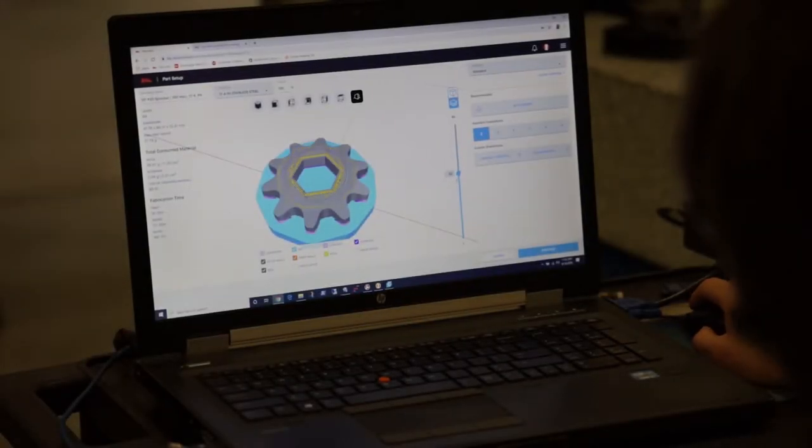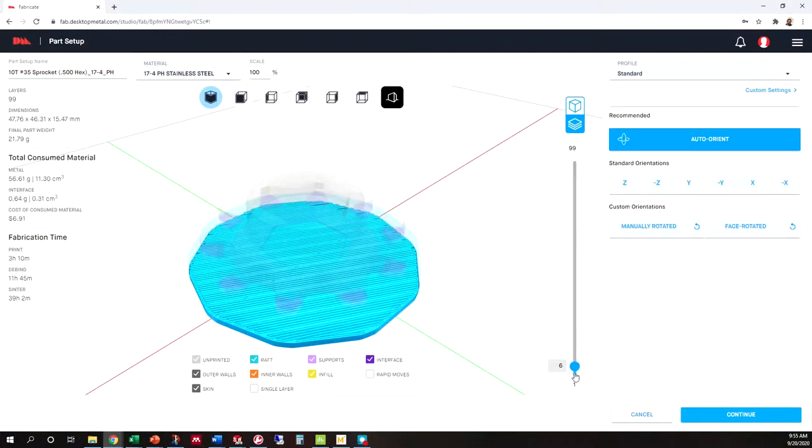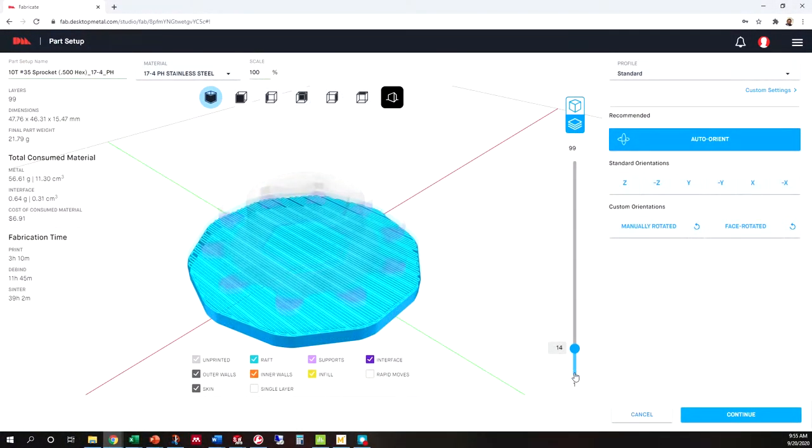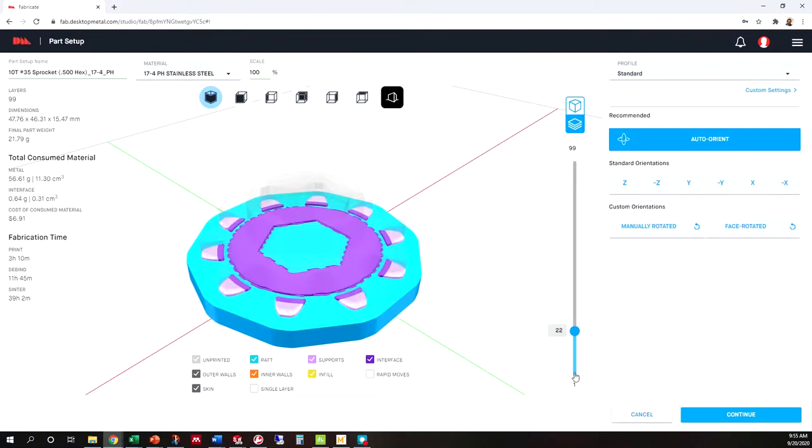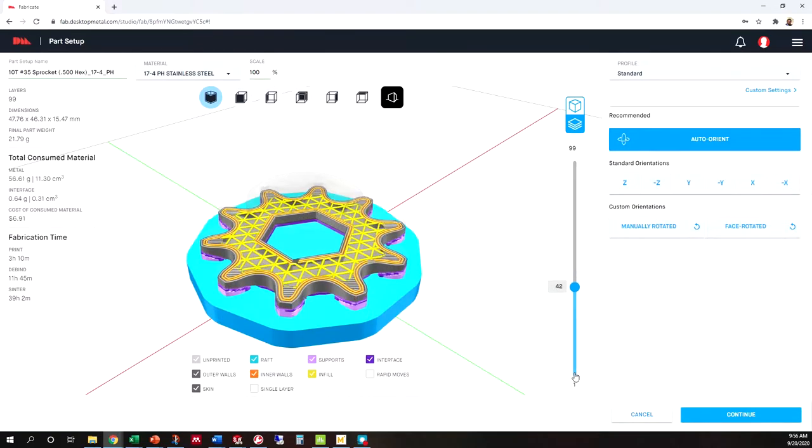The first step to producing a part is the part design. In CAM, we usually receive the computer-aided design or CAD model from the client. The 3D model is subsequently uploaded to the cloud-based slicer, which is where printing settings are applied to the part.